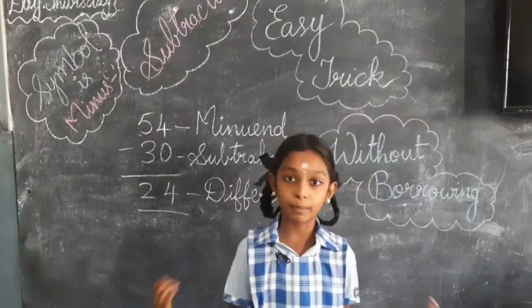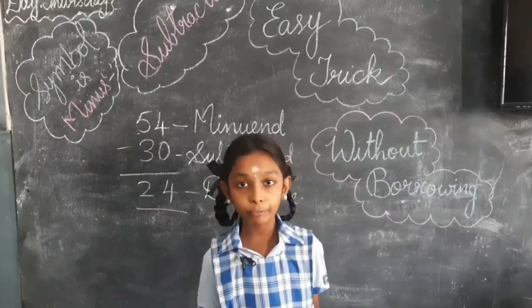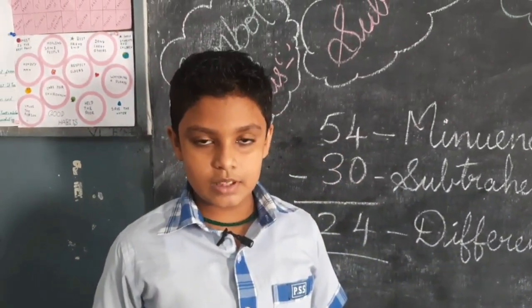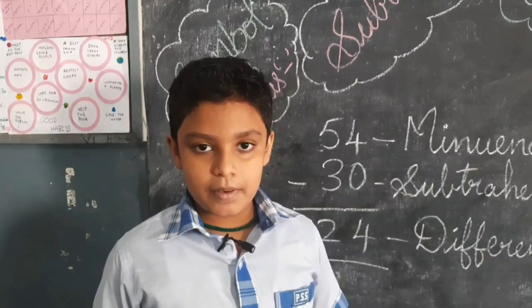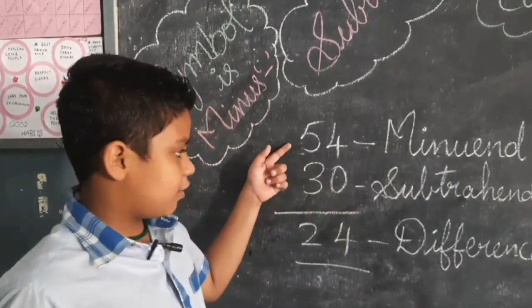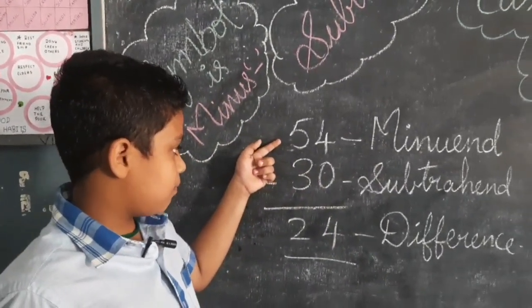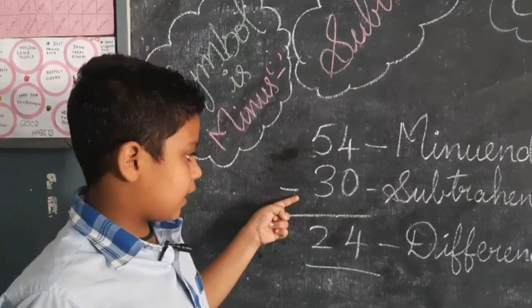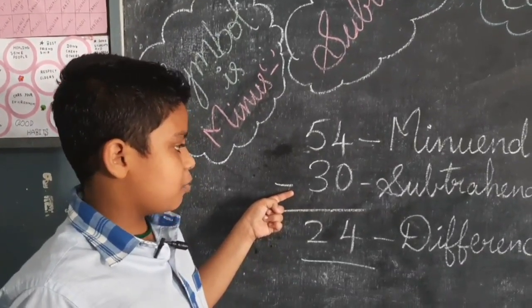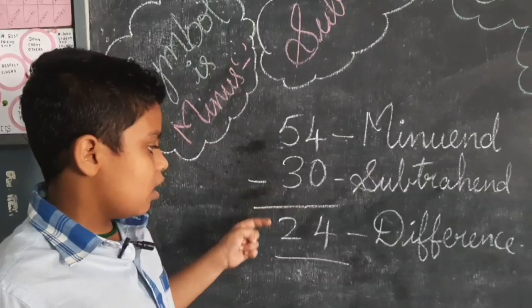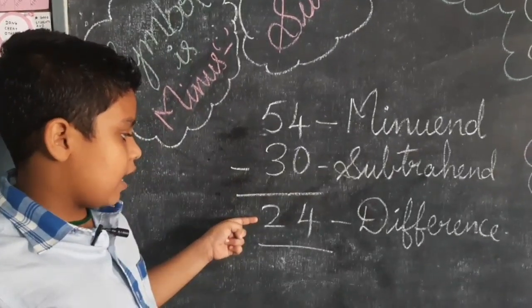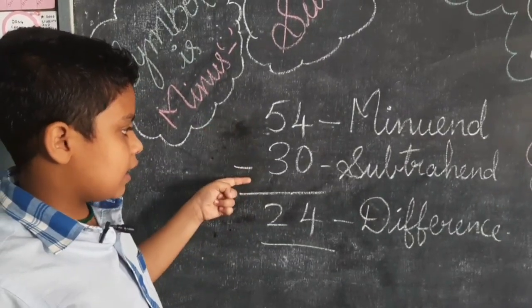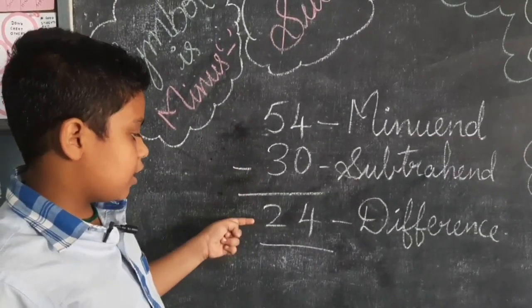There are three parts of subtraction. Now I call my friend Raghav Krishna to explain it to you. The three parts are: minuend, subtrahend, and difference. The first number, or the number from which another number is subtracted, is called the minuend. The second number, or the number to be subtracted, is called the subtrahend. The difference is the resulting number, or the final answer. Here, 54 is the minuend, 30 is the subtrahend, and 24 is the difference.